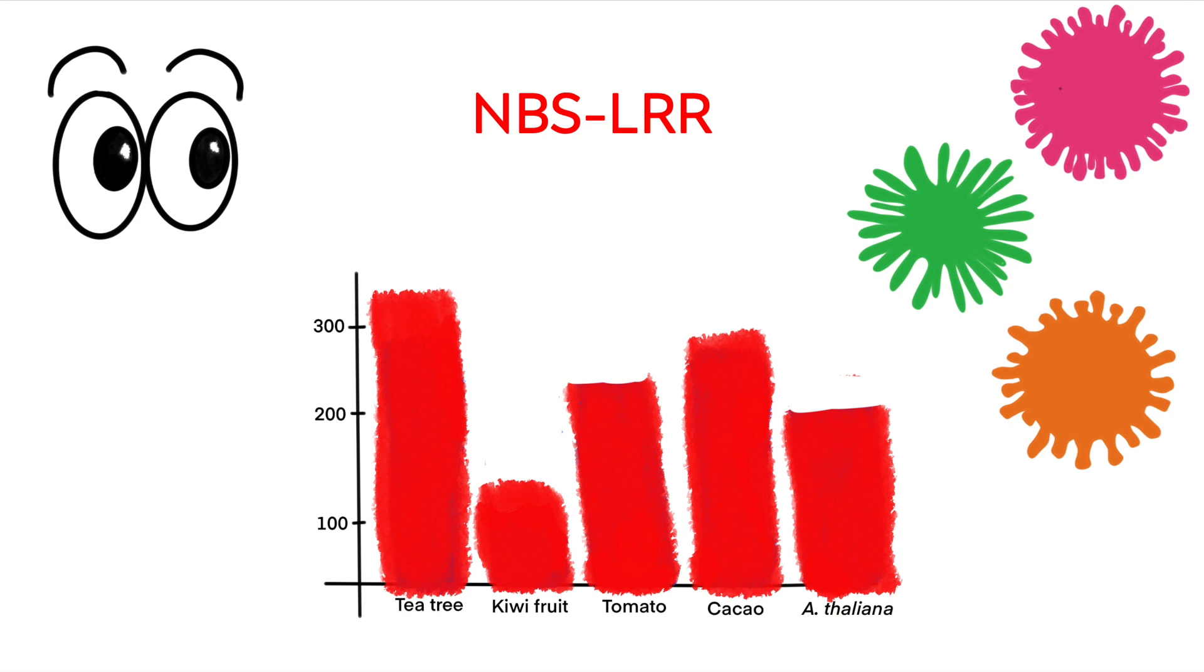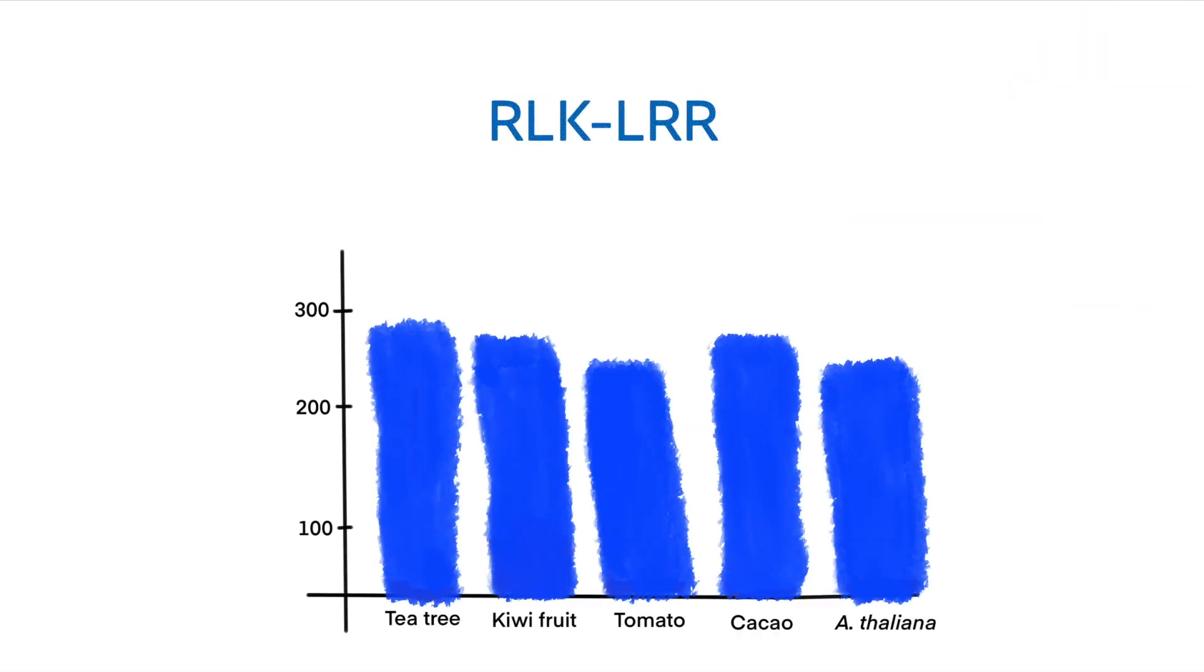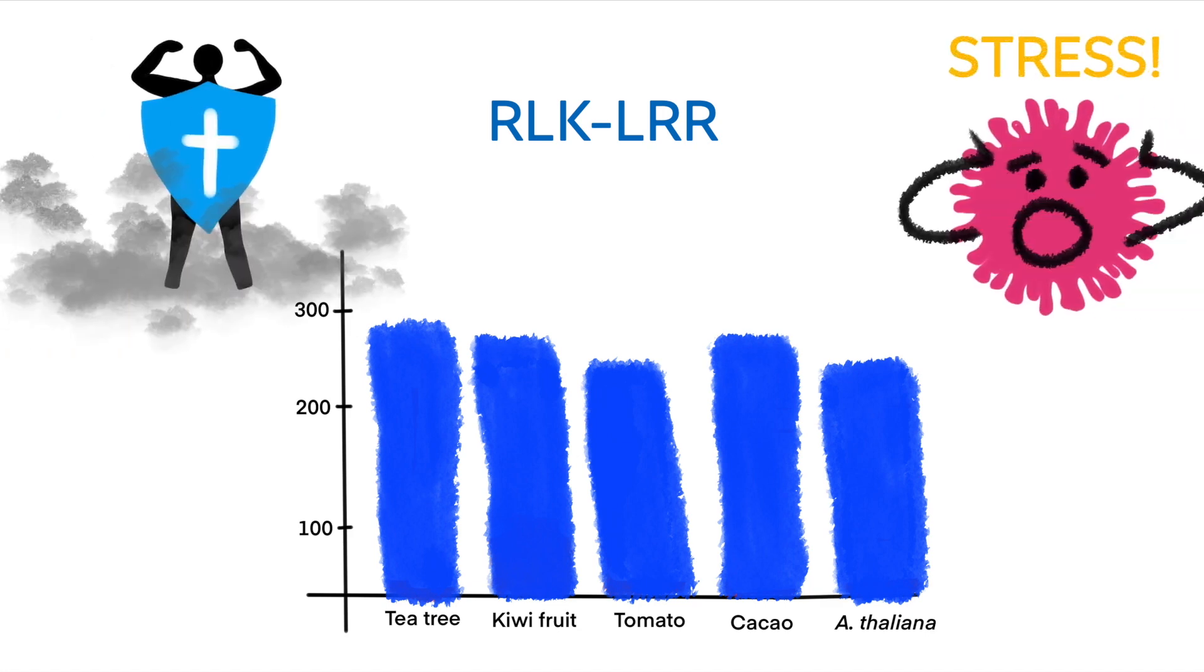Additionally, the tea tree contains slightly more RLK-LRR genes than the eudicots. These genes play an importance in stress response and pattern-triggered immunity where it can send defense responses for pathogenic defense. This type of immunity is considered as an ancient form of innate immunity in plants.